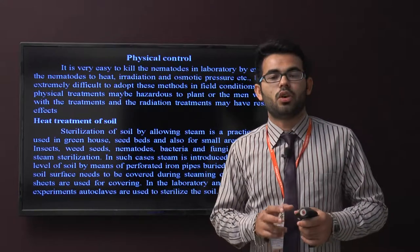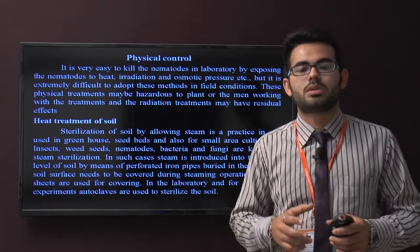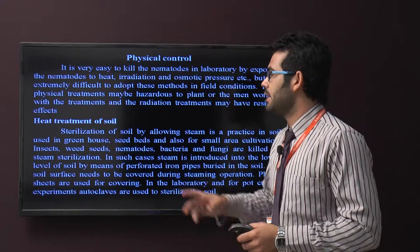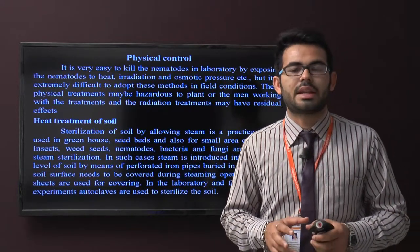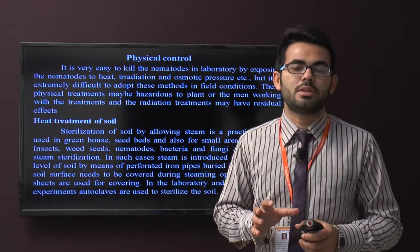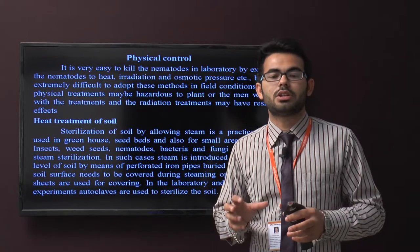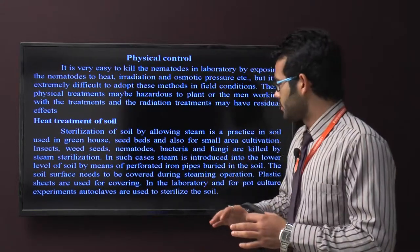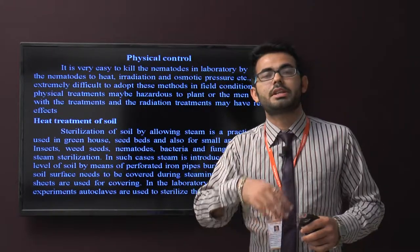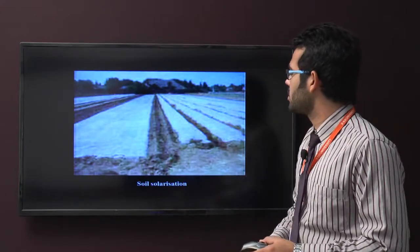First is heat treatment of soil. Sterilization of soil using steam is practiced in soil used in greenhouses, net houses, seed beds, and also for small areas but not for use in large areas. Insects, viruses, nematodes, bacteria, and fungi are killed by steam sterilization. In such cases, steam is introduced in the lower level of the soil by means of perforated iron pipes buried in the soil and the soil surface needs to be covered during the steaming operation. Plastic sheets are also used for covering to increase the temperature.